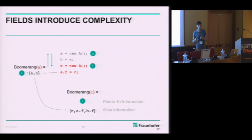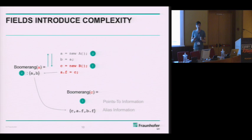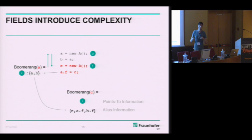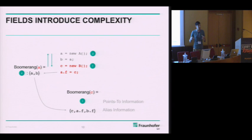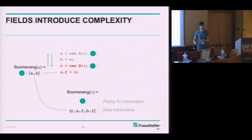Boomerang uses IFDS internally to solve these subqueries. IFDS is only able to solve distributive problems, but alias analysis is normally a non-distributive problem. We managed to divide it into subqueries such that IFDS can solve a non-distributive problem. We build an outer fixed-point iteration on top to resolve these subqueries and get the right information. Also, because we use IFDS, we directly receive flow sensitivity and context sensitivity from this underlying framework.